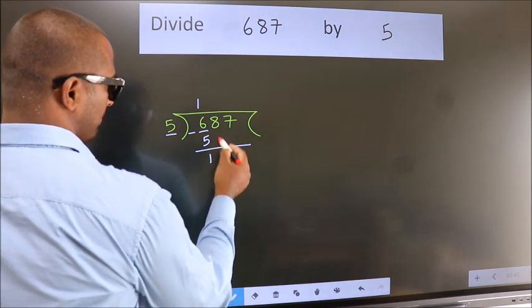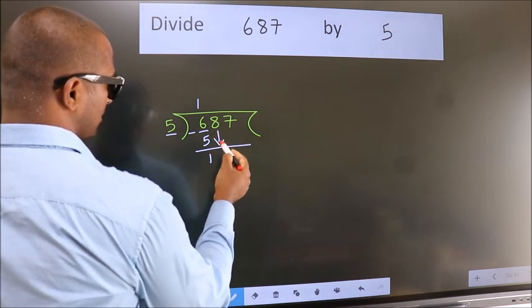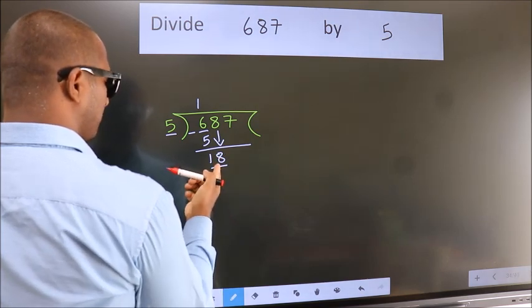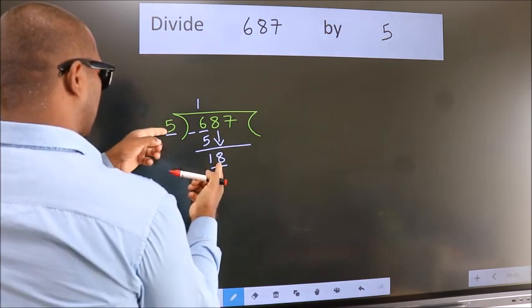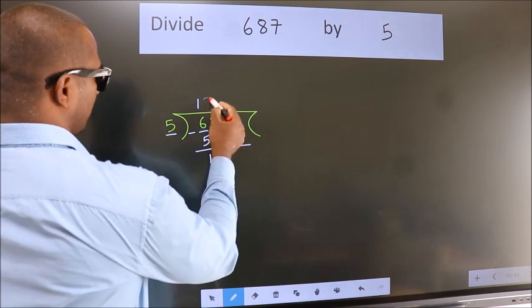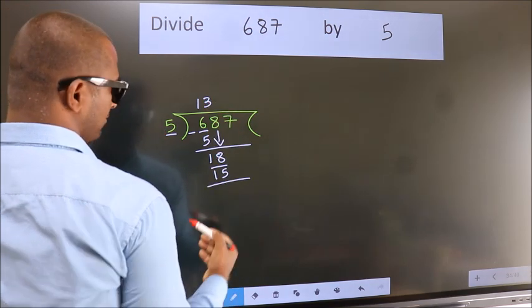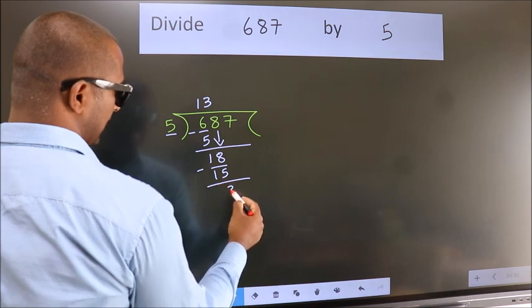After this, bring down the beside number. So 8 down. So 18. A number close to 18 in 5 table is 5 threes 15. Now we subtract. We get 3.